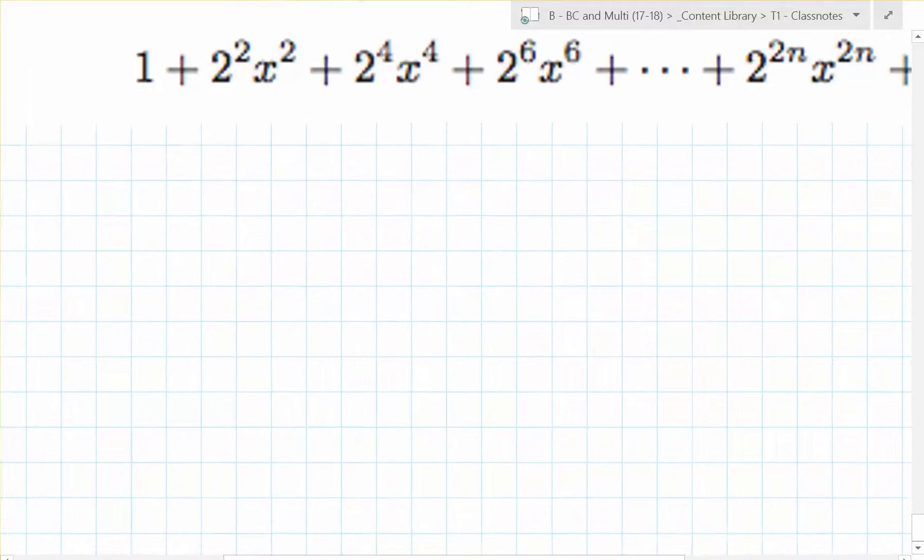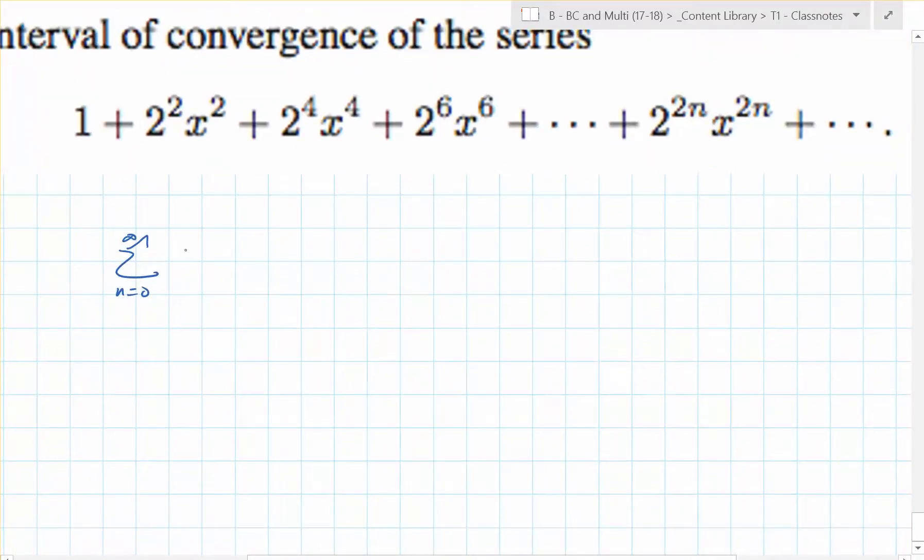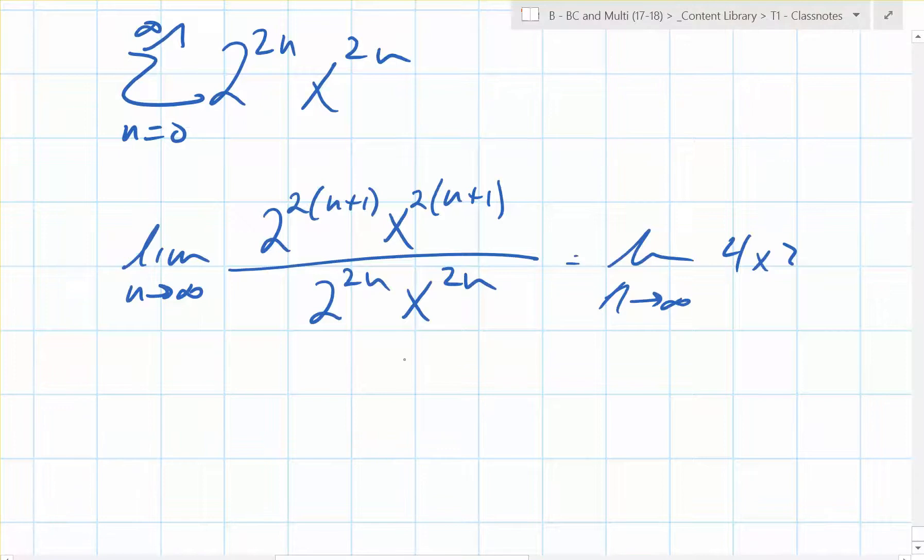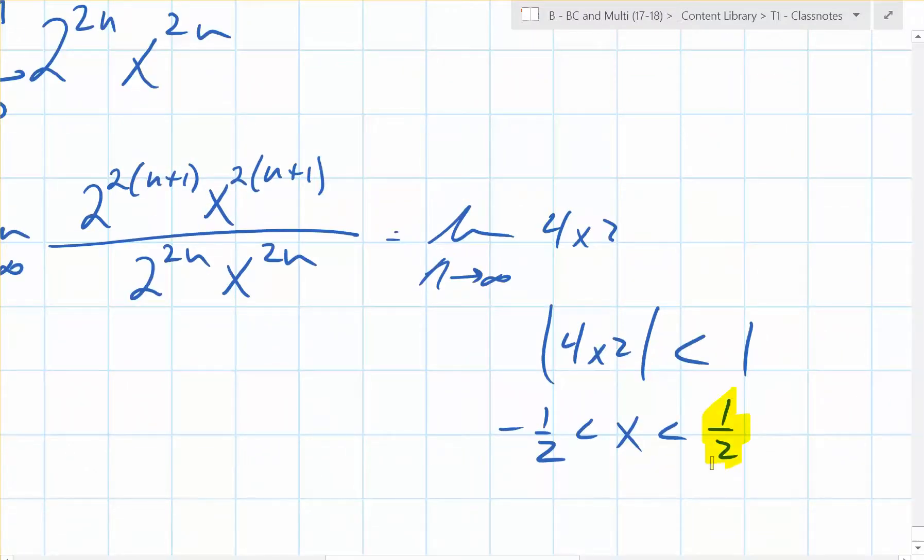Did you write a general form for this? Yeah, it came with 1. So you do have 2 to the 2n times x to the 2n. So 4x squared. The absolute value of that has to be less than 1. So x needs to be between 1 half and negative 1 half. But you need to test the endpoints.